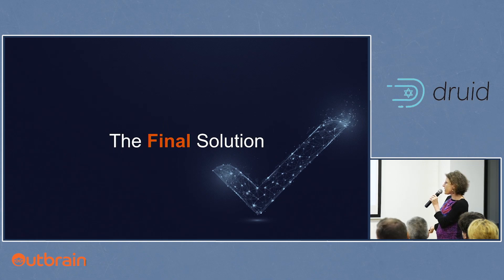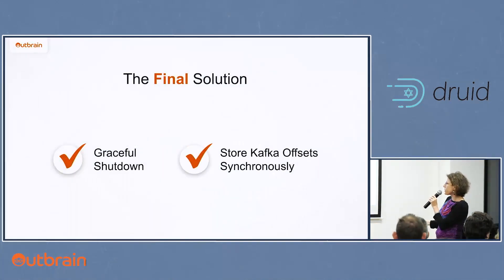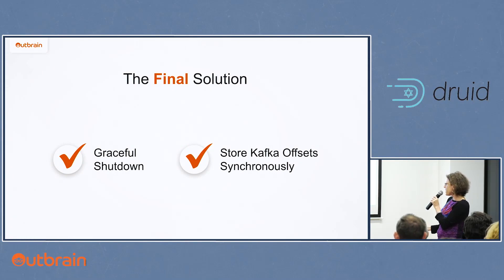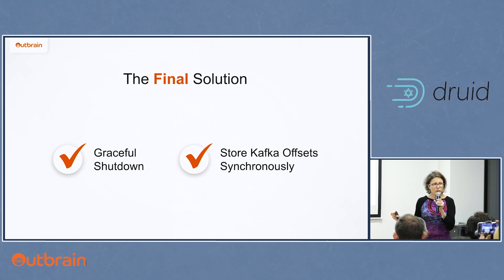We implemented synchronous offset storage by writing offsets to an HDFS file on every RDD. When jobs start up, they look for the offsets file and continue consuming Kafka from those specific offsets. If no offsets file exists, the job starts from the latest offsets. Only the combination of graceful shutdown and storing Kafka offsets synchronously solves the problem.